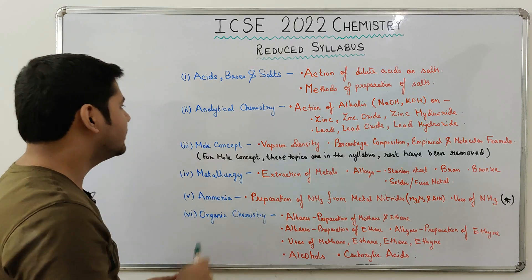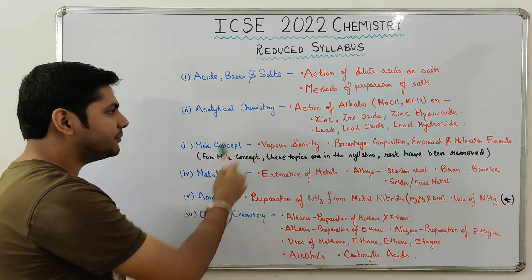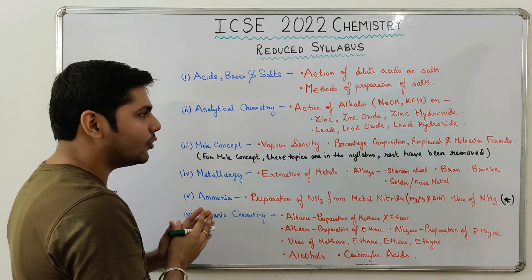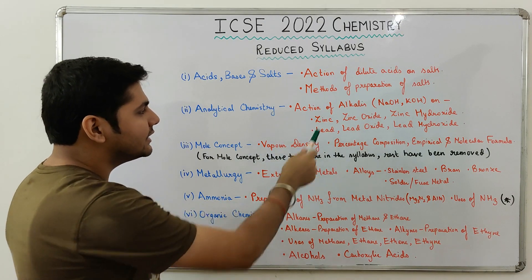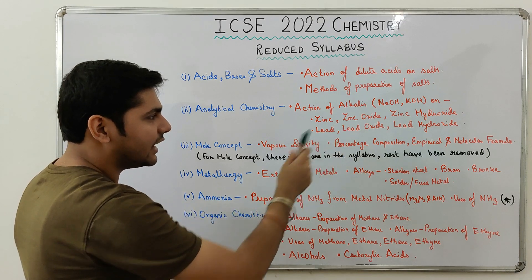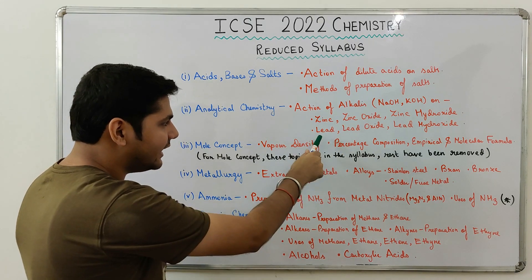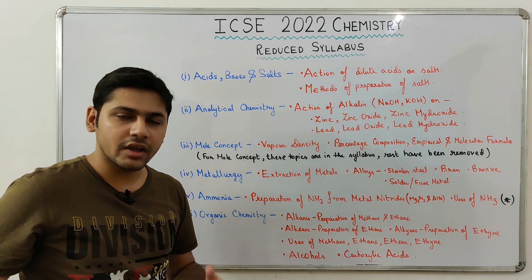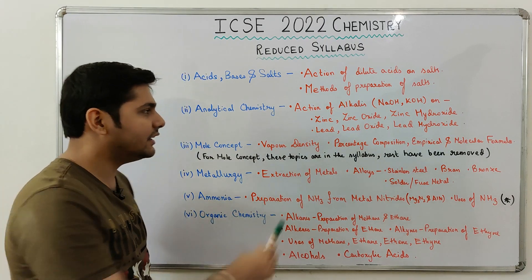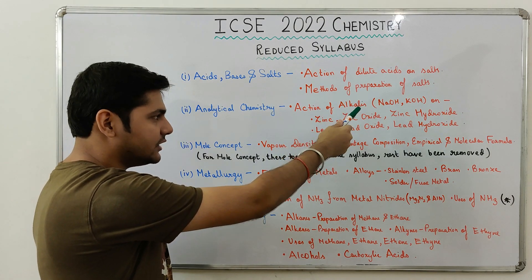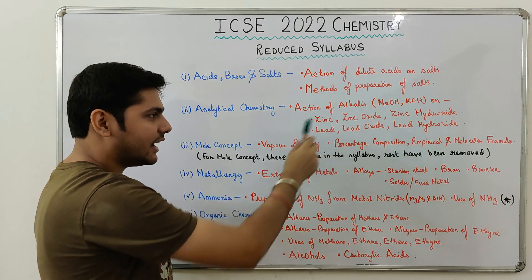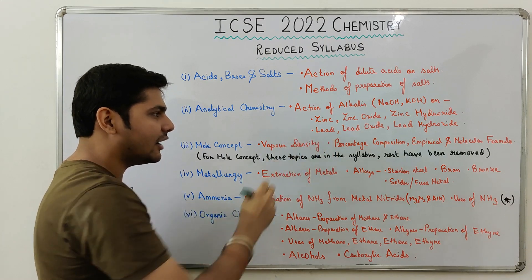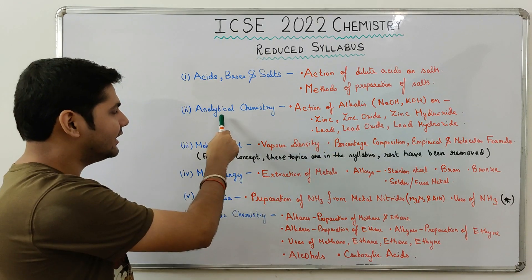Next, from Analytical Chemistry, the action of alkalies — NaOH and KOH — on Zinc, Zinc Oxide, Zinc Hydroxide and Lead, Lead Oxide, Lead Hydroxide have been removed. So you don't have to study the action of NaOH/KOH on Zinc, Zinc Oxide, Zinc Hydroxide and Lead, Lead Oxide, Lead Hydroxide from the chapter Analytical Chemistry.